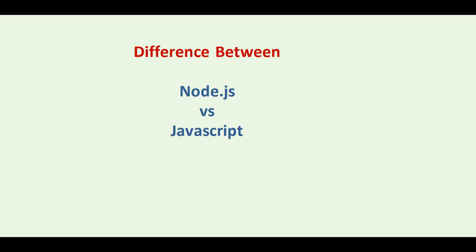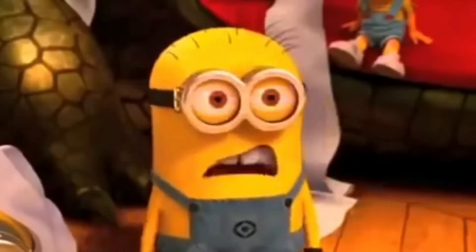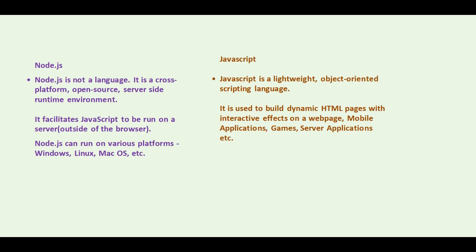In this video we are going to see the difference between Node.js and JavaScript. Node.js is a cross-platform open source server-side runtime environment. It is not a programming language. Basically, Node.js facilitates JavaScript to be run on a server outside of the browser. Node.js can be run on various platforms like Windows, Linux, Mac, etc.